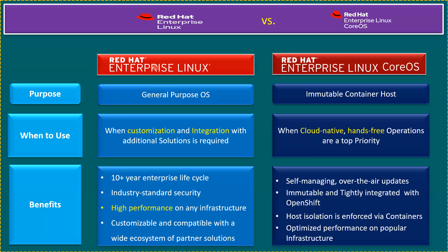When to use these two platforms: RHEL or Red Hat Enterprise Linux is mainly used when customization and integration with additional solutions is required. CoreOS is used when cloud-native, hands-free operations are a top priority. Only for cloud-native scenarios do we go with CoreOS; for all other scenarios, we prefer RHEL or Red Hat Enterprise Linux.